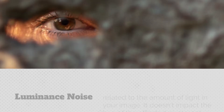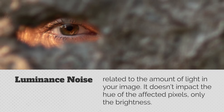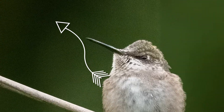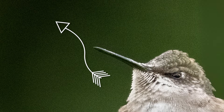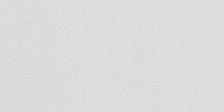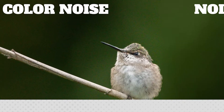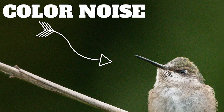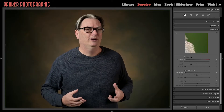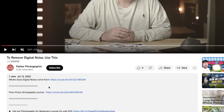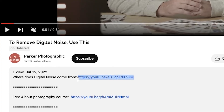Luminance noise is related to the amount of light in your image. It doesn't impact the hue of the affected pixels, only the brightness, and you're going to see this type of noise as gray specs in your images. Color noise, on the other hand, has a distinct pattern of colors that appear as color specs, like reds and blues. If you're wondering where digital noise comes from, check out the video tutorial in the description to discover more about it.